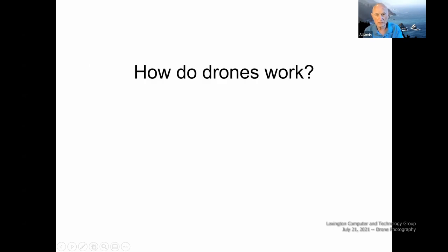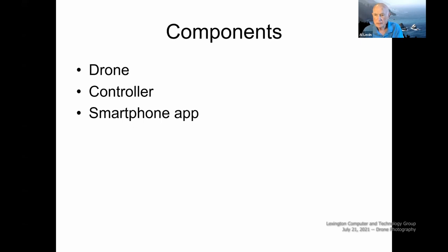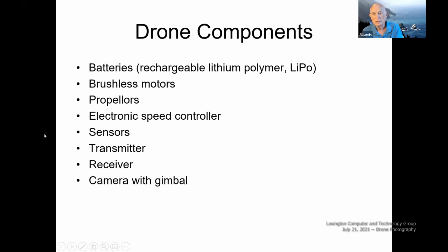How do drones work? I want to apologize for the chutzpah it takes to talk to you about how drones work — most of you have devoted your lives to understanding how stuff works, so please be tolerant. There are basically three components: the drone itself, a device that controls the drone, and a smartphone app. The drone has to have a source of power — lithium batteries. It has brushless motors that rotate the propellers, and the speed of these motors can be controlled, which is critical, as you'll see in a moment.